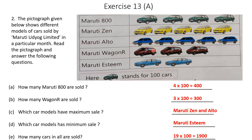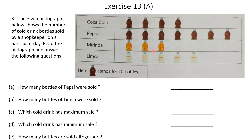This was solved the same way — look at the picture, calculate, and you get the answer. Moving to the third question: the pictograph given below shows the number of cold drink bottles sold by a shopkeeper on a particular day. Here, 1 bottle stands for 10 bottles, so we have to multiply anything we find by 10.